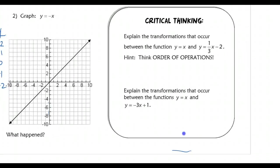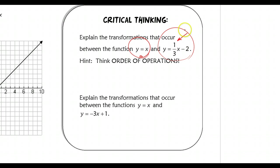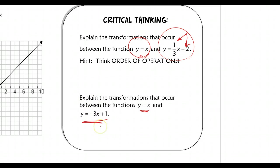Now the critical thinking part: take a look at these two functions — y equals x and y equals one-third x minus two. This is your parent function, and we're going to compare it to the new function. Think about what is happening if we apply both transformations: one where we multiply by one-third, like problem two, and one where we subtract two, like problem one. Then explain the transformations that would occur between the mother function and this new function. Come to class tomorrow prepared to explain both — that will be your entrance into class.